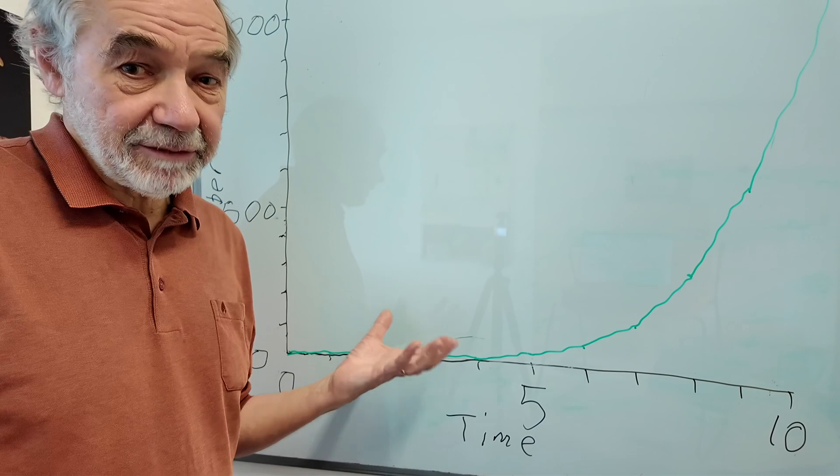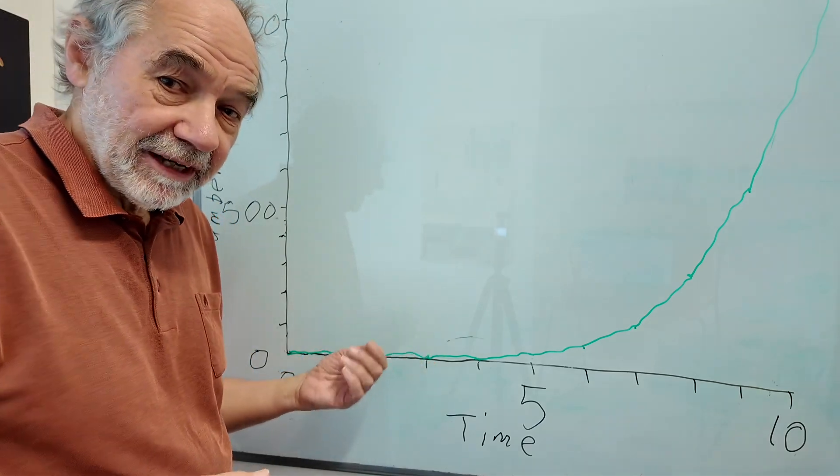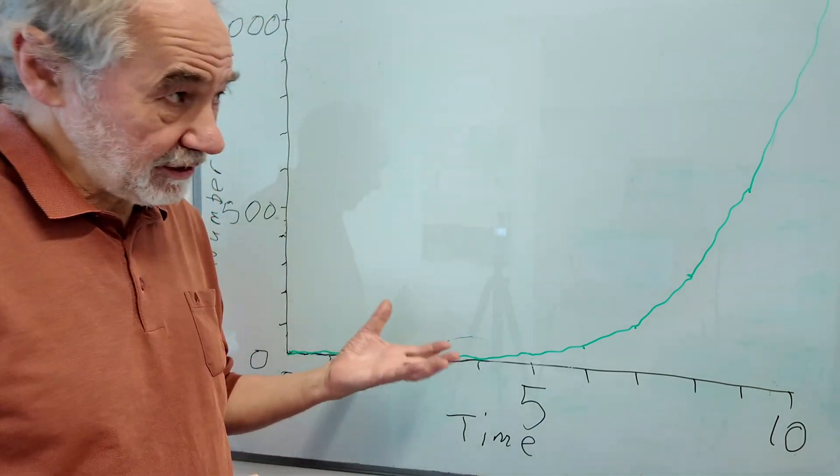After 60 time intervals you'll have a million and you'll have a billion with another 30 time intervals.